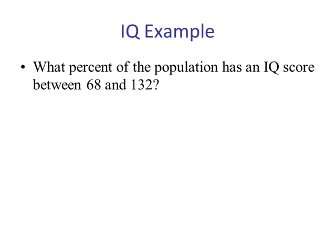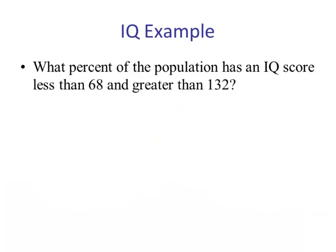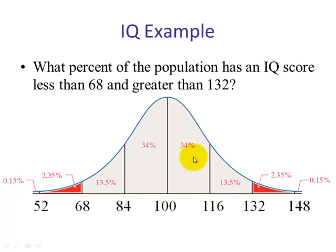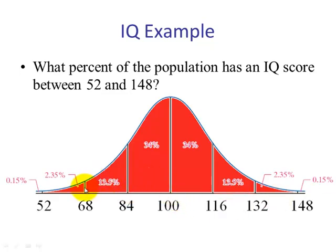What percent of the population has an IQ score between 68 and 132? Drawing the picture, we see this is exactly two standard deviations below and two above the mean, so by the empirical rule this middle area is 95%. What percent has a score less than 68 or greater than 132? The left and right tails together are 5%. What percent is between 52 and 148? That's three standard deviations from the mean, so approximately 99.7%.